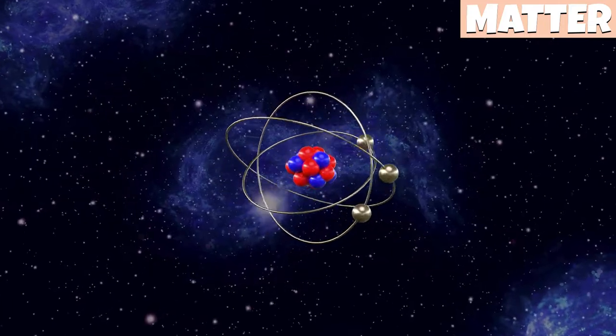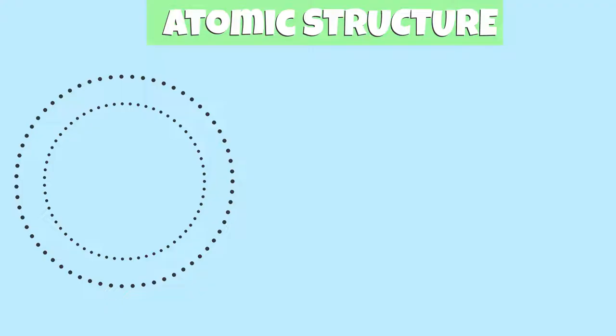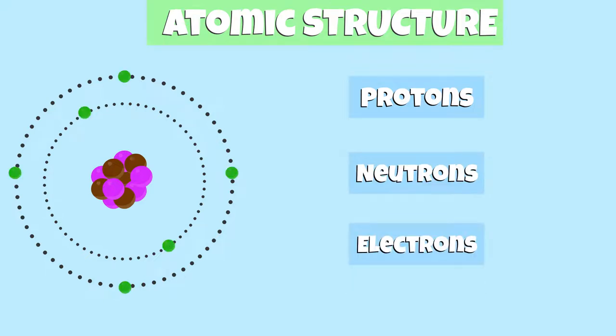All matter is made up of tiny particles that have atoms. In an atom, you'll find a proton, a neutron, and an electron.